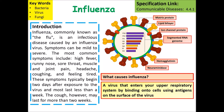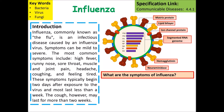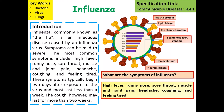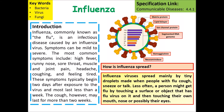What causes influenza? A virus that enters the upper respiratory system and binds onto the cell using antigens on its surface — specifically the haemagglutinin and neuraminidase antigens. Symptoms include high fever, runny nose, sore throat, muscle and joint pain, headache, coughing and feeling tired. Influenza viruses are spread mainly by tiny droplets when people cough or sneeze, or by touching a surface or object that has the flu virus on it and then touching mucous membranes including the mouth, nose and possibly eyes.